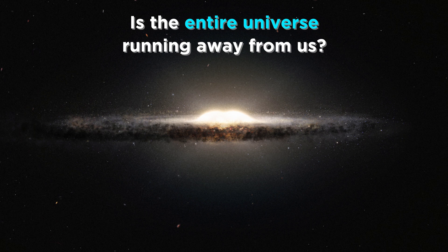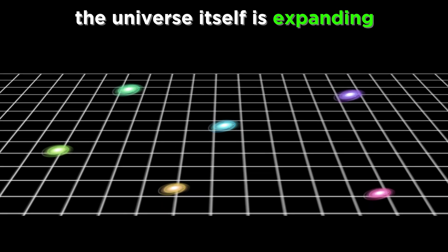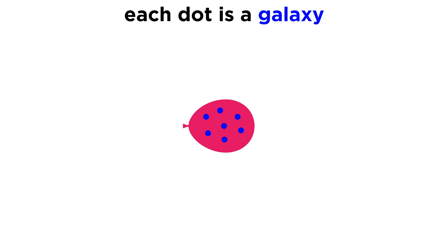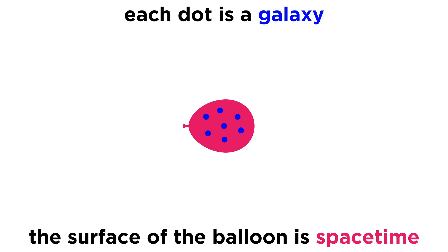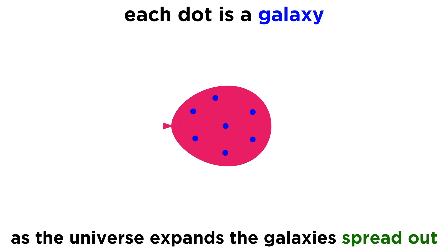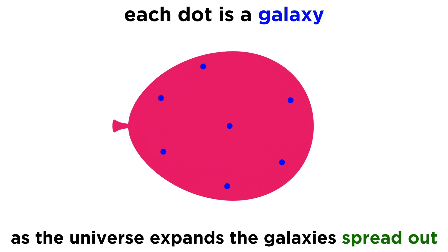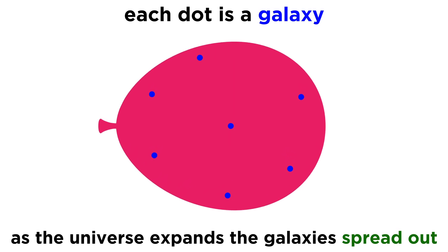Rather than assuming the Milky Way is an especially repulsive galaxy that the others are fleeing from, astronomers realized that the universe itself must be expanding. If we imagine that the dots on this balloon represent galaxies, and the surface of the balloon represents the spacetime fabric of the universe, as the balloon expands, all of the dots get spread apart. All of them are moving away from all the others, and no matter which dot you're standing on, all the others will appear to recede from you.